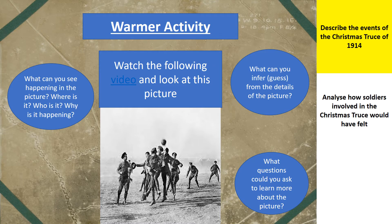Now, a warmer activity to help you with our first aim — to describe the events of the Christmas Truce of 1914. Watch the following video: if you click on the word 'video' it's hyperlinked and takes you to an advert from Sainsbury's about the Christmas Truce. Then look at the picture below. What I want you to think about and note down in your jotter is: What can you see happening in this picture? Where is it, do you think? Who's in the picture? Why do you think it's happening? What can you infer or guess from the details of the picture? And what questions could you ask to learn more about this picture?